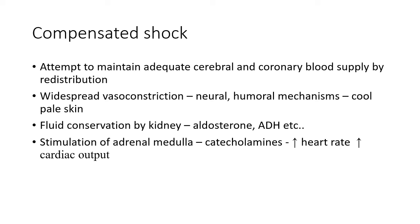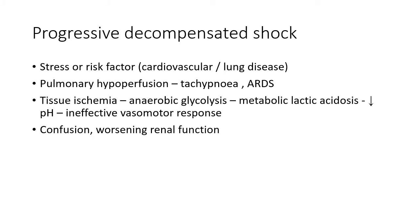If the condition causing shock is adequately treated at this stage, the compensatory mechanisms may bring recovery and re-establish normal circulation. However, this does not happen when the patient suffers from pre-existing conditions like cardiovascular or lung disease. In such cases, the stage progresses into the next stage called progressive decompensated shock.